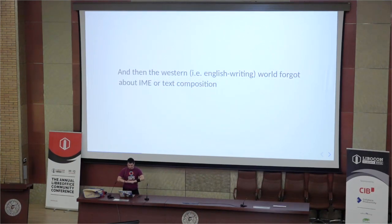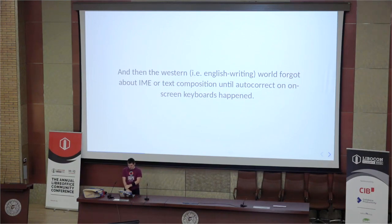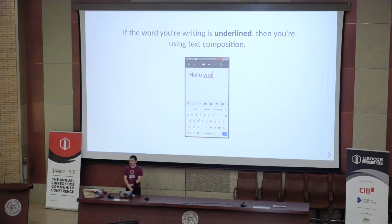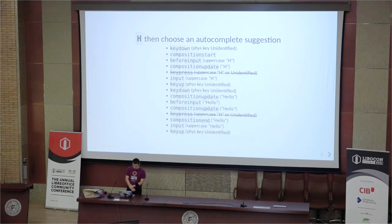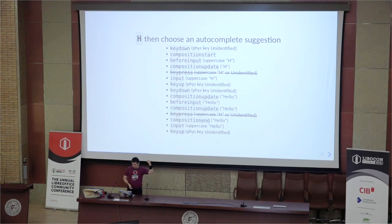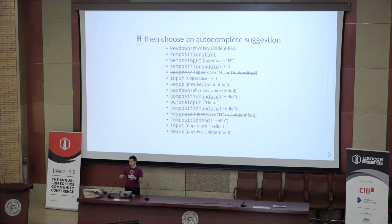Everyone in Europe forgot about text composition — until autocorrect on smartphones happened. None of us noticed we're all using text composition, because whenever a word is underlined on a smartphone, we are composing characters. So if I'm pressing H and then pressing an autocompletion to 'hello', you're pressing a physical key which is unidentified because it's a touch screen, you get an H, then press a different unidentified key, a composition update happens, and the whole thing gets added to the document. This breaks all the conceptions about keyboards, and you can reproduce these things right now with your phone.